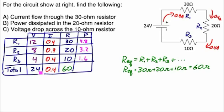For the total, 24 volts times 0.4 amps gives me 9.6 watts. And of course, the individual powers dissipated by R1, R2, and R3 should add up to 9.6. So 4.8 plus 3.2 plus 1.6 equals 9.6 watts total.